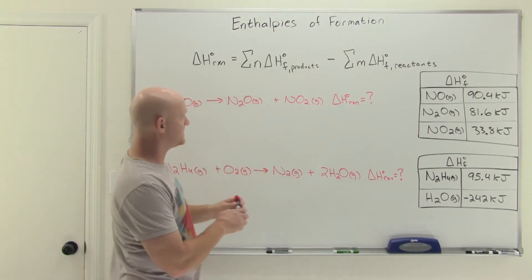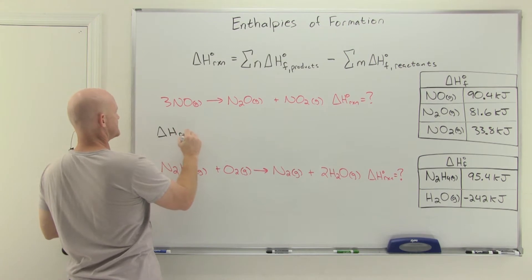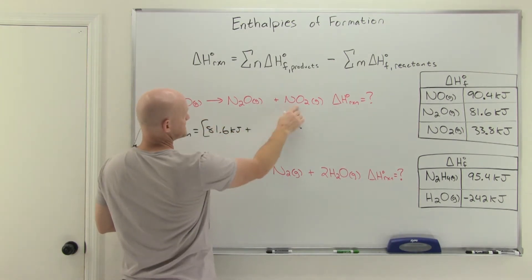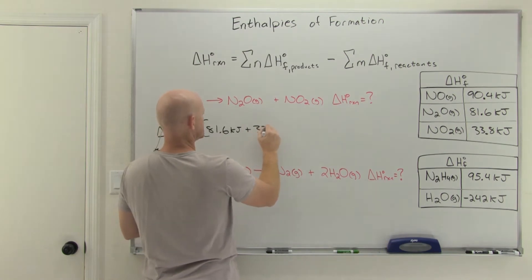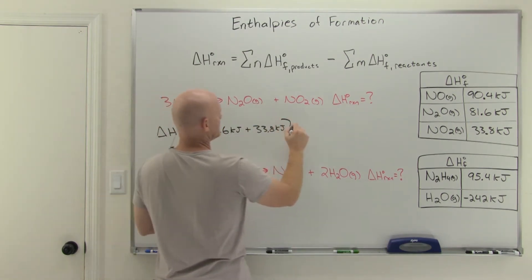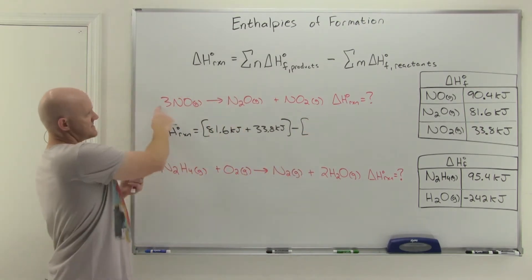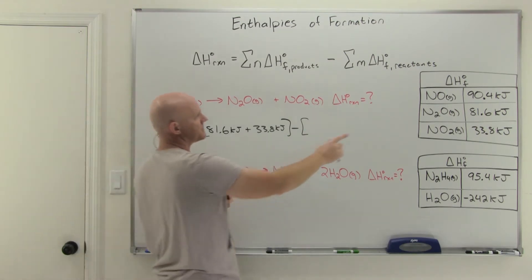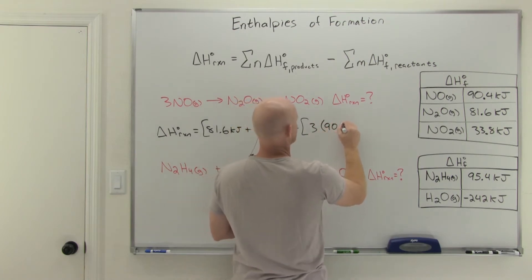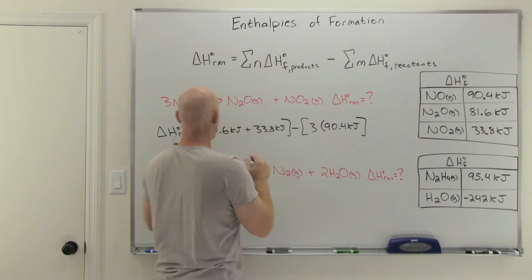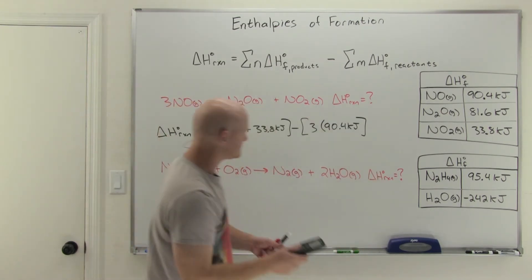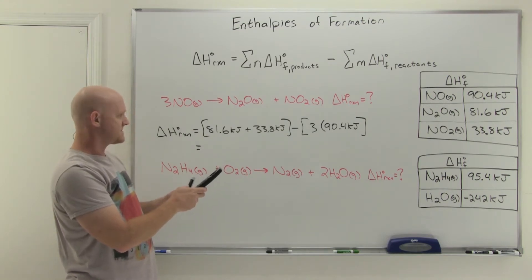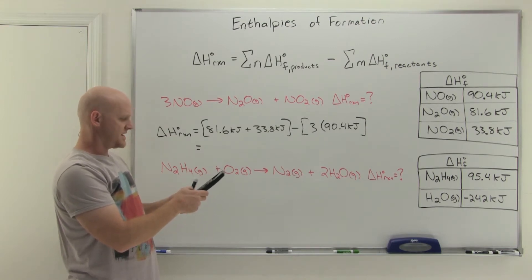We'll start with N2O. That's going to be 81.6. So delta H of the reaction is going to equal 81.6 kilojoules, plus the value for NO2, which is 33.8 kilojoules. That is all your products. Then we'll subtract out the reactants. The M and the N here refer to the number of moles in the reaction. So when there are coefficients, you've got to multiply by that. We'll have to multiply NO's value by a 3. So 3 times 90.4.